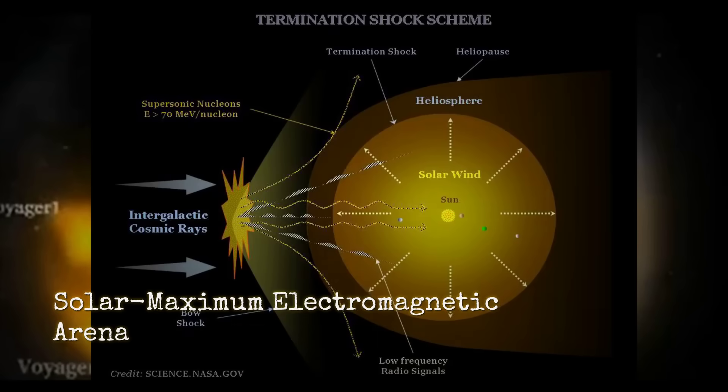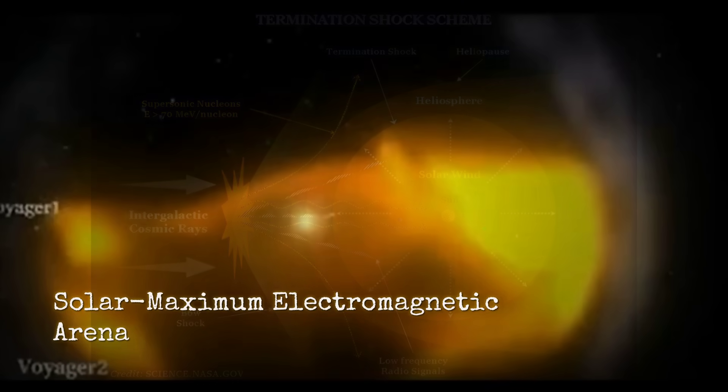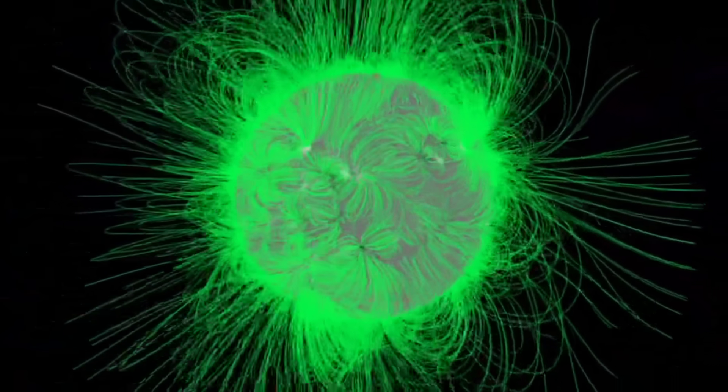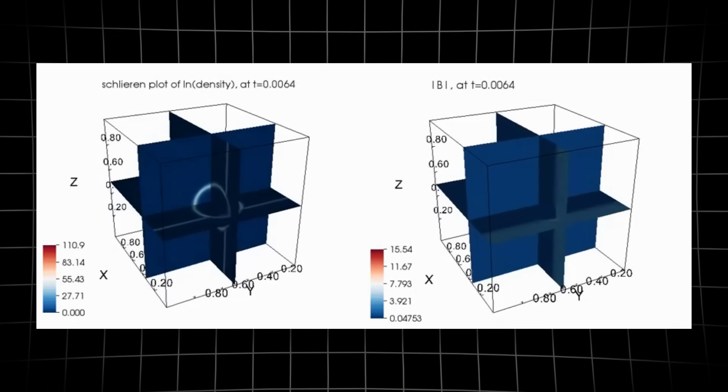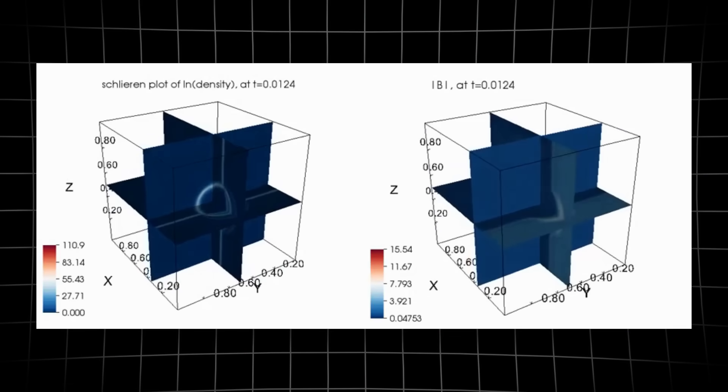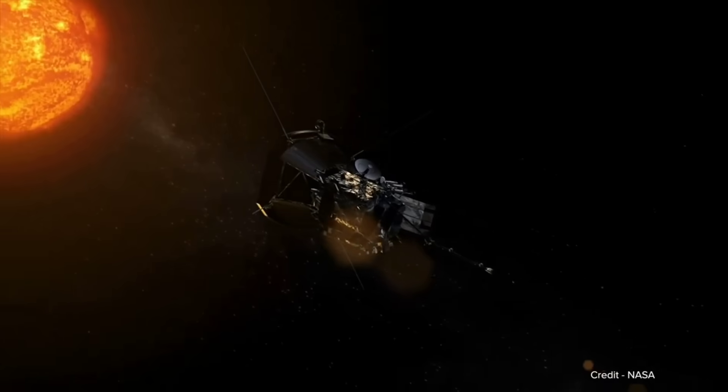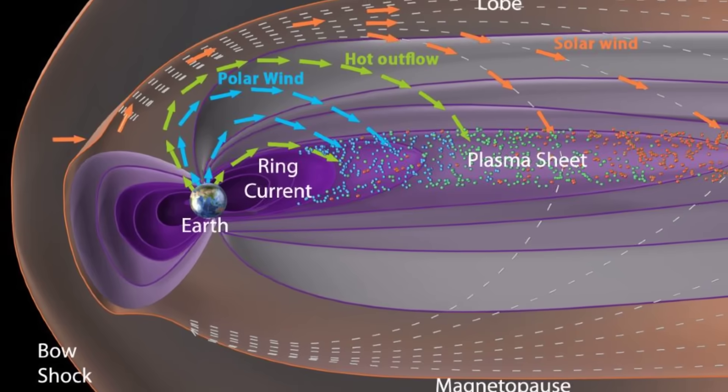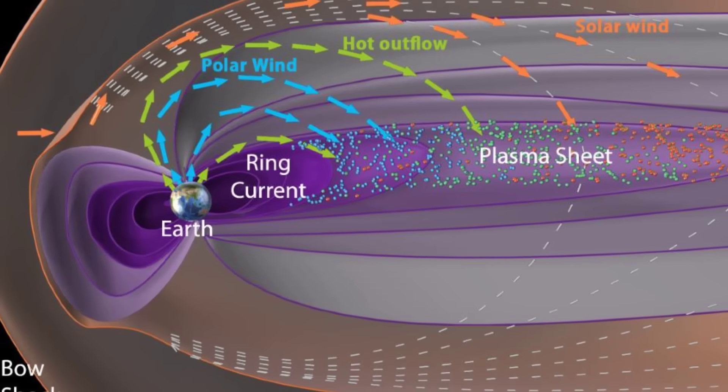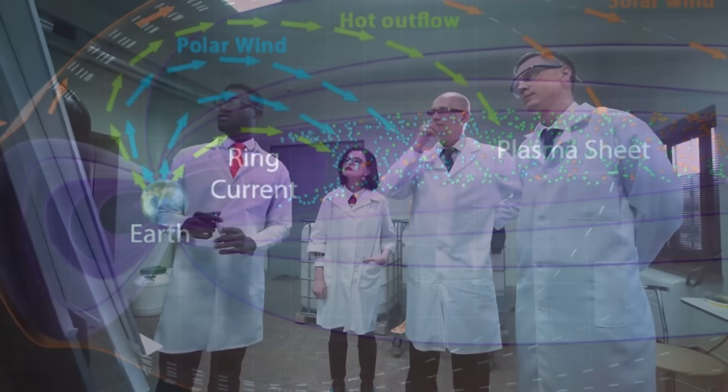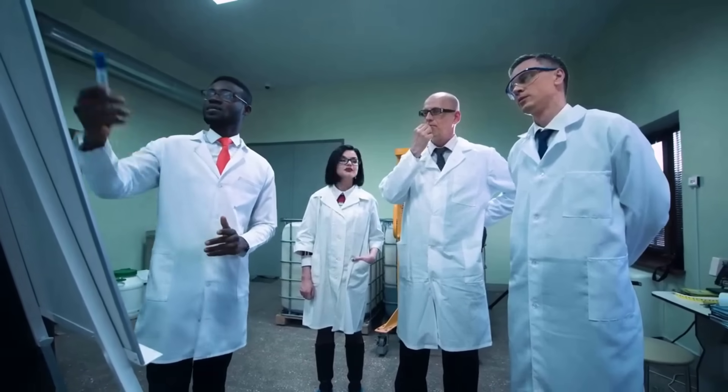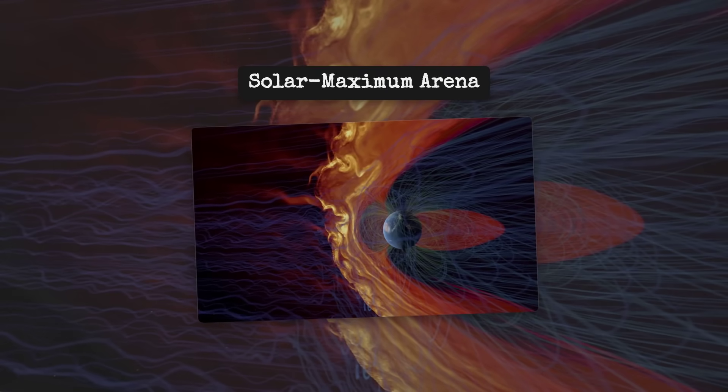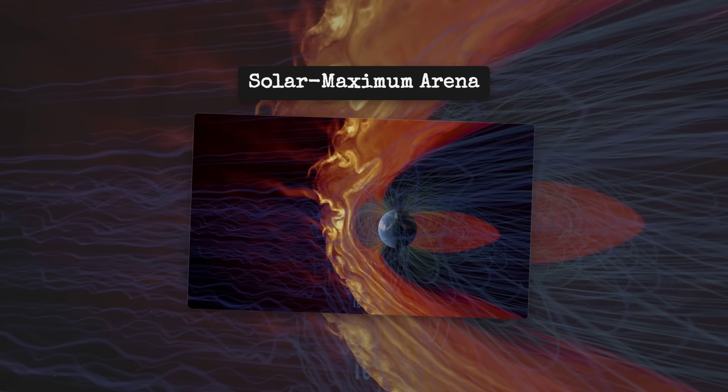This creates what's called a magnetohydrodynamic interaction. The object's magnetic field interacts with the solar wind's magnetic field, potentially creating bow shocks and wake structures. Some scientists think these electromagnetic interactions are purely passive. The object just responds to solar wind pressure and radiation. Others believe there could be more active coupling, where the object's own electromagnetic properties influence the local space environment.